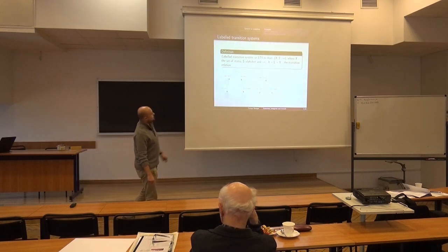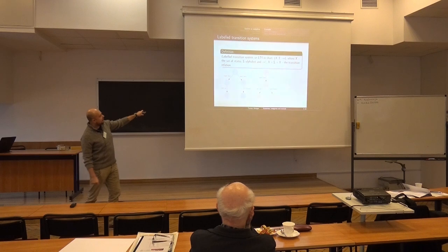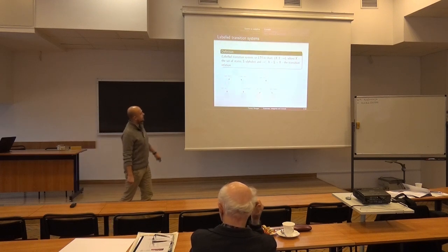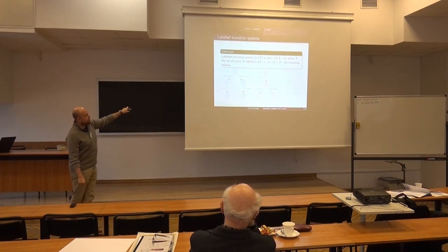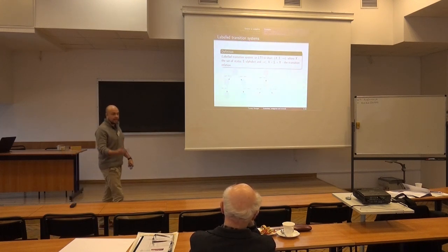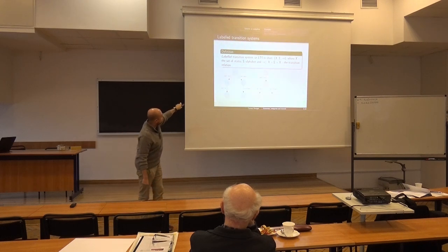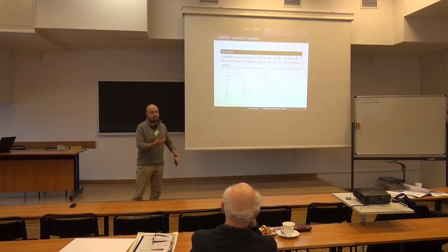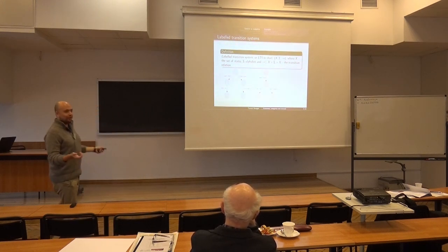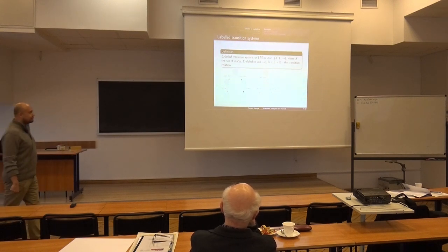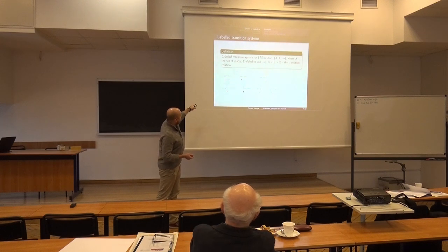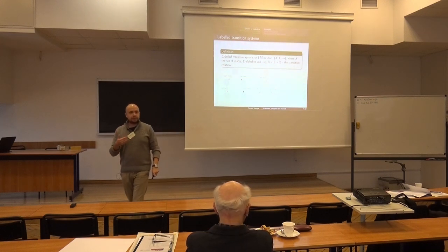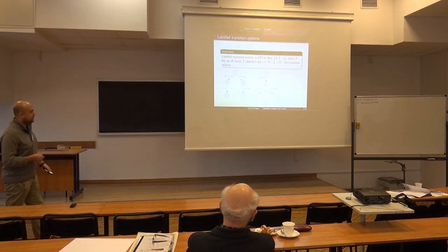In these two pictures, you have states being the circles, either colored in blue or red. The transitions are labeled with a certain action. From a state here, you can either open a door and move here or move there. Basically, a labeled transition system is a set of states and transitions between them, each transition being labeled with an action.